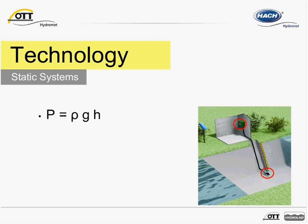Depending on the water level, shown here as H, above the orifice opening, an air pressure equal to the hydrostatic pressure, shown here as capital P, is established inside the measuring tube. In this equation, small g is gravitational acceleration and lowercase p is the specific gravity of water.